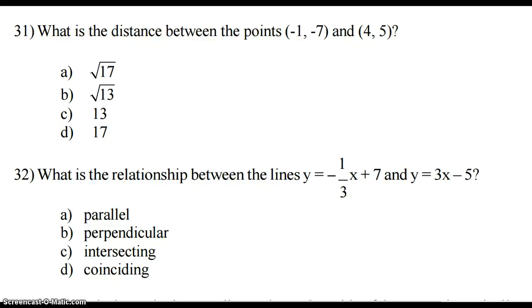Okay, we're going to check out numbers 31 through 35 on the MCA packet. Number 31 asks us to find the distance between two points.